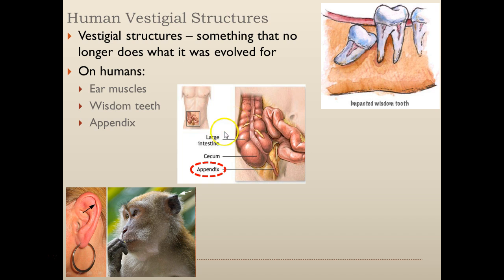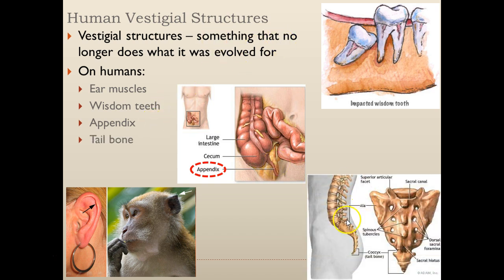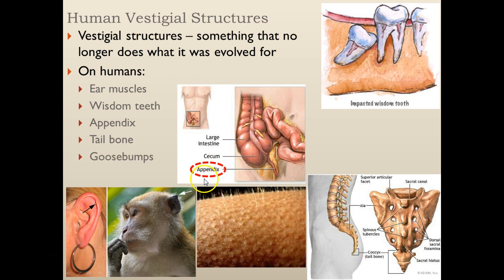The appendix — some of us, myself included, have also had our appendix removed. The appendix is something that no longer does what it was originally evolved for. It serves as an extra little area at the end of your large intestine for fermenting things and breaking down plants. We don't have as much of a plant diet as we used to, but we still have the appendix — and occasionally it kills you. The tailbone: some people have broken their tailbone. It serves as an attachment site for some muscles, but for the most part it doesn't do what it was originally evolved for — namely, support a tail. Animals with tails have more structure extending from it; we don't, but we still have the tailbone.